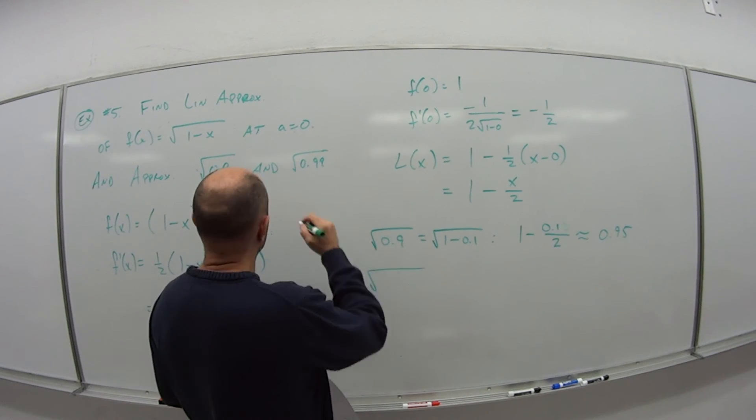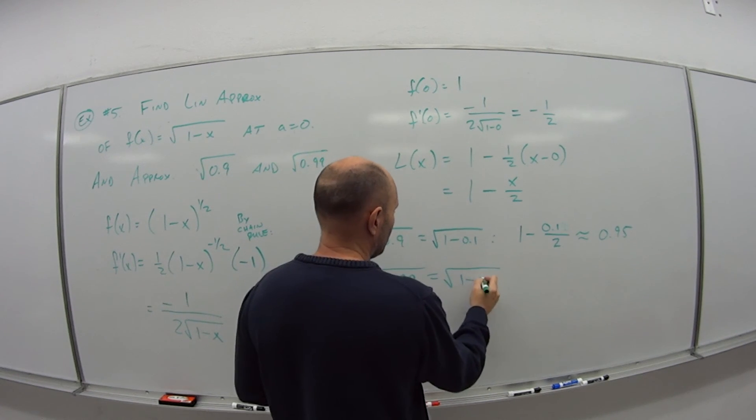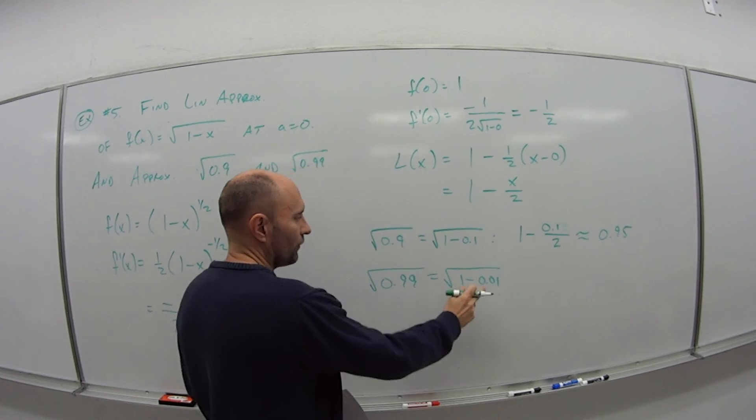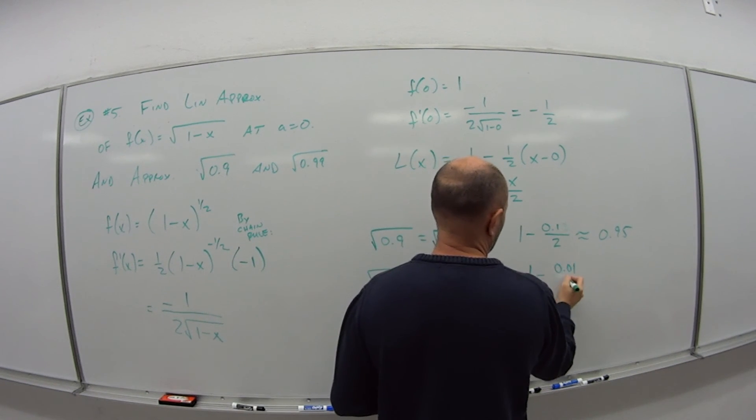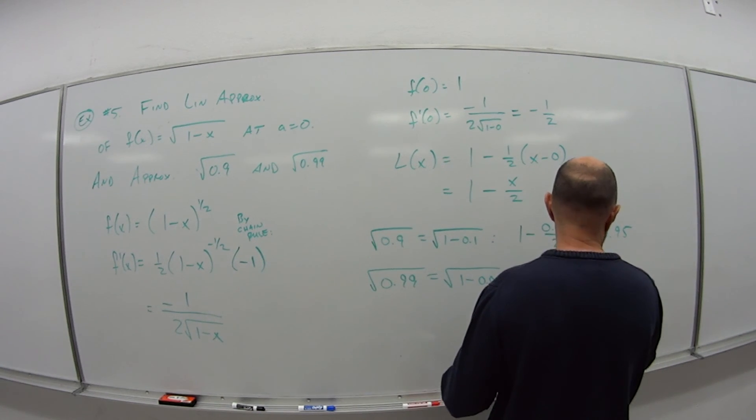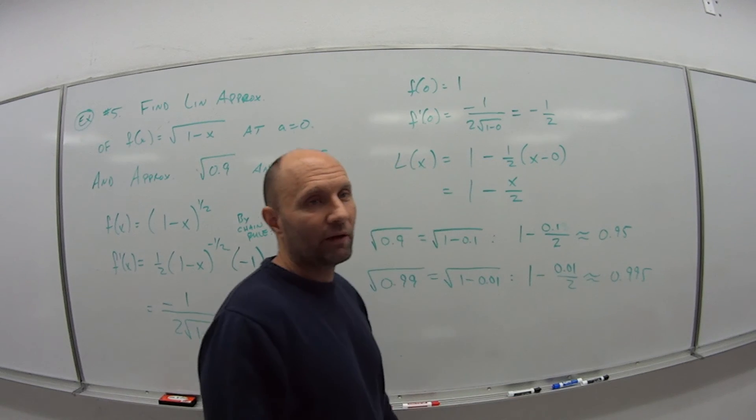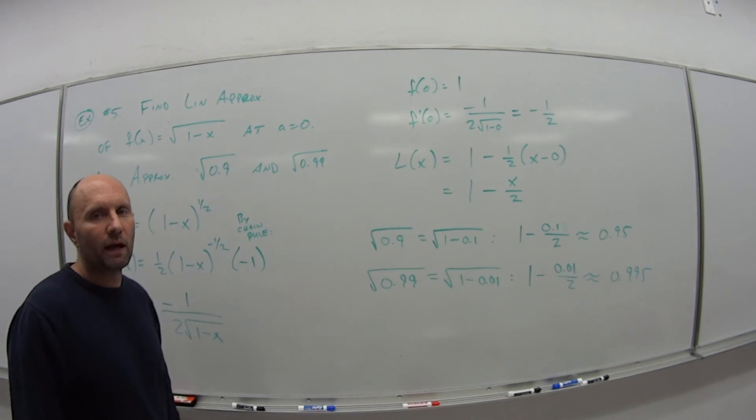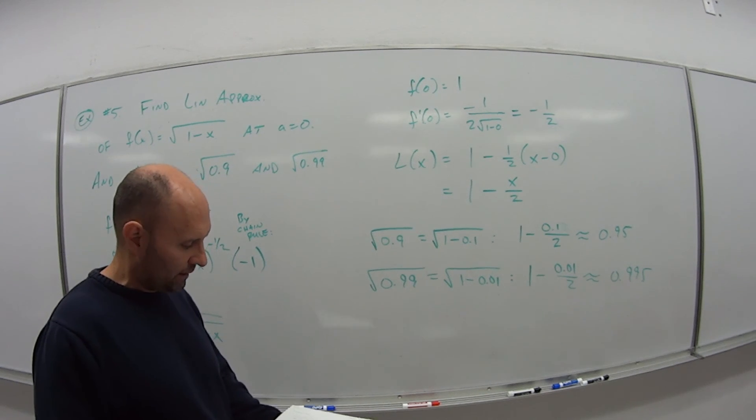And for 0.99, this is the same as 1 minus 0.01, so that's my new x. So 1 minus 0.01 over 2 tells me that this is approximately 0.995. And if you want to see how good they are, go ahead and do it on your calculator. You're going to find out that they're basically the same values there.